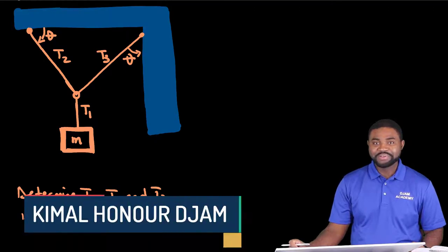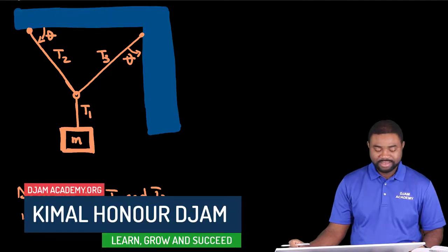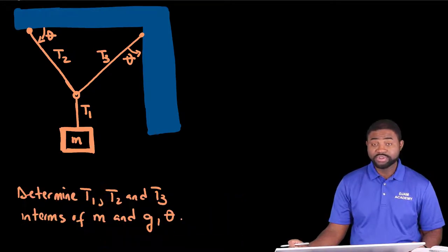Hello everyone and welcome to Gem Academy. In this example, we have a box of mass M suspended by three strings onto a ceiling. It's more or less like a road sign or a sign around maybe a restaurant advertising what they are selling. Now, the question is to determine the tension in all the strings in terms of M, G, and Theta.